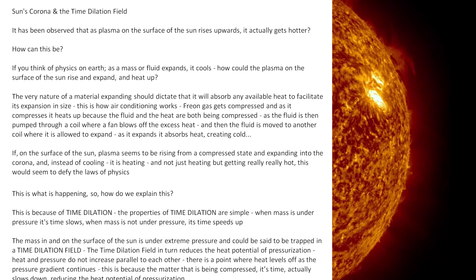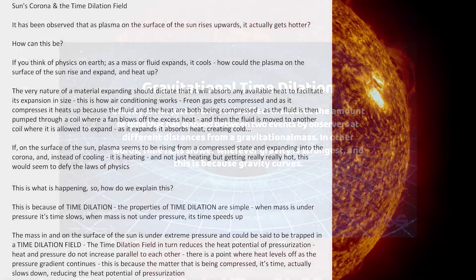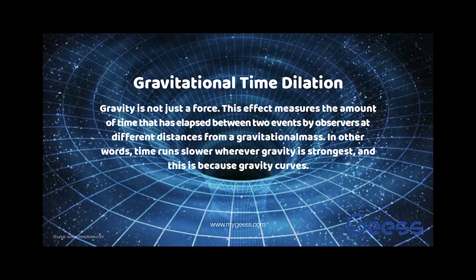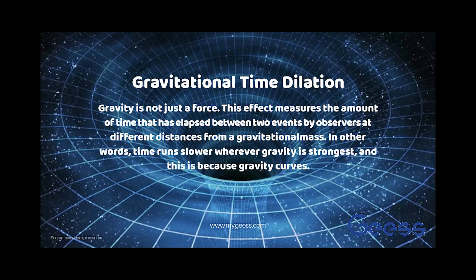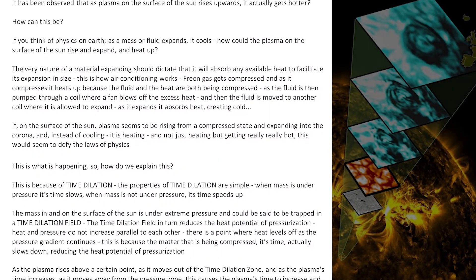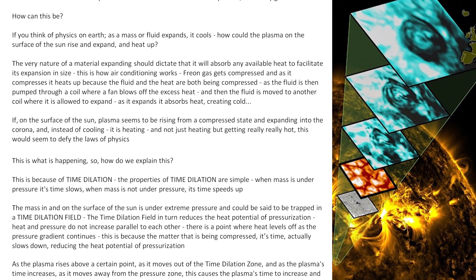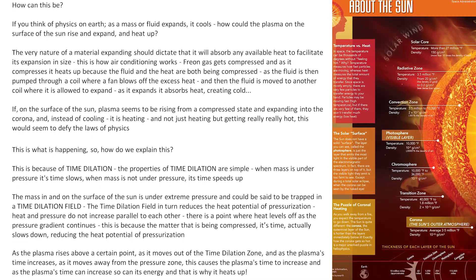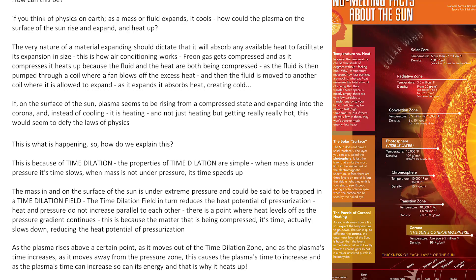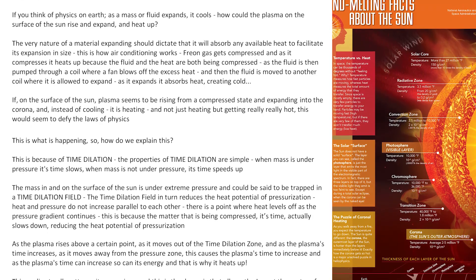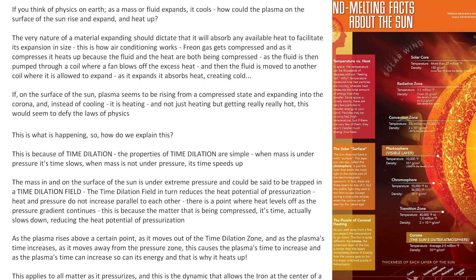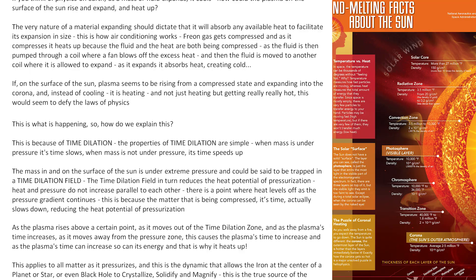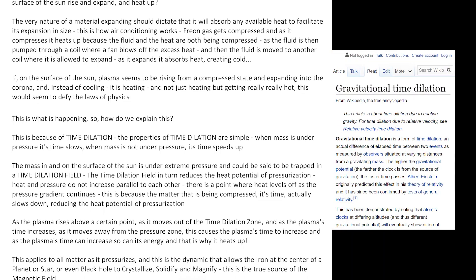This is what is happening, so how do we explain this? This is because of time dilation. The properties of time dilation are simple. When mass is under pressure, its time slows. When mass is not under pressure, its time speeds up. The mass in and on the surface of the sun is under extreme pressure and could be said to be trapped in a time dilation field. The time dilation field in turn reduces the heat potential of pressurization. Heat and pressure do not increase parallel to each other. There is a point where heat levels off as the pressure gradient continues, because the matter that is being pressurized — its time actually slows down — reducing the heat potential of pressurization.